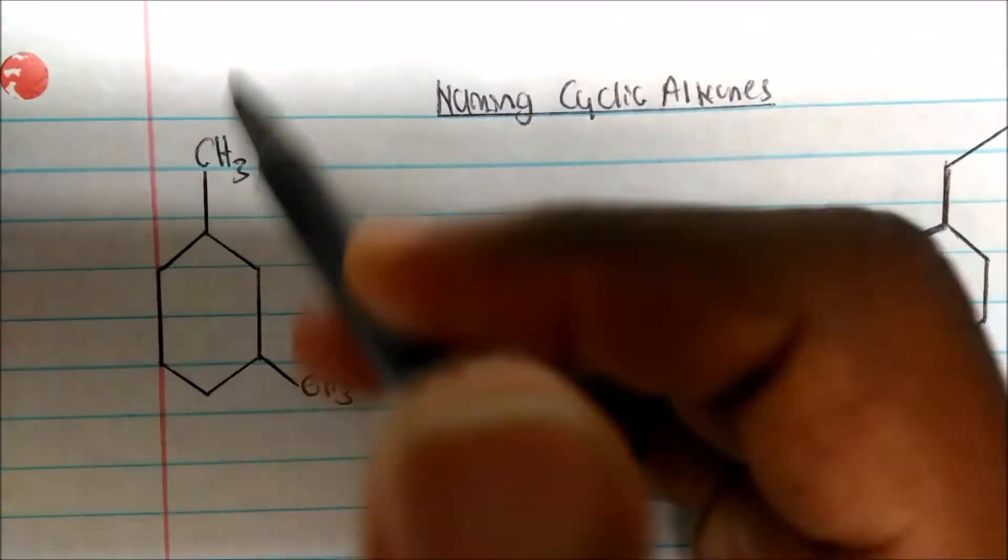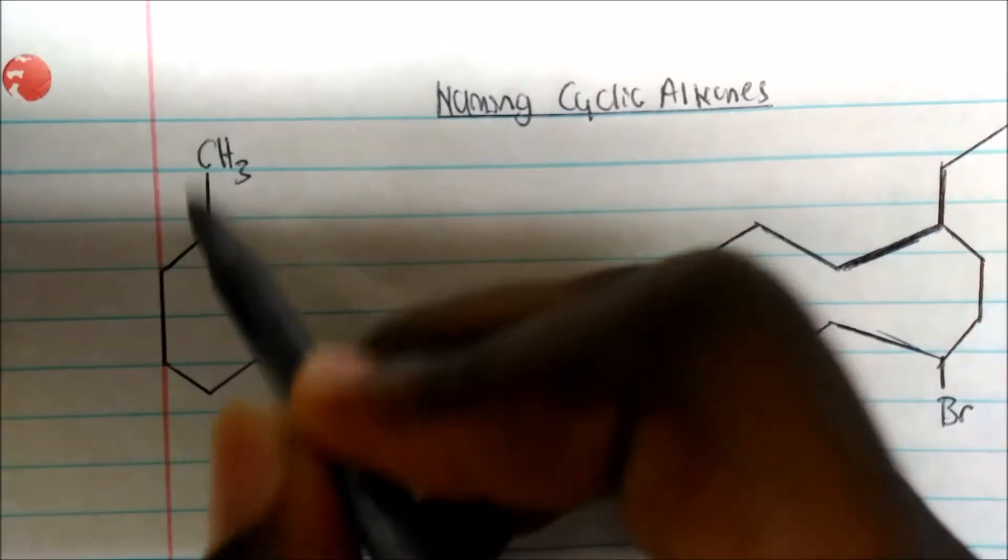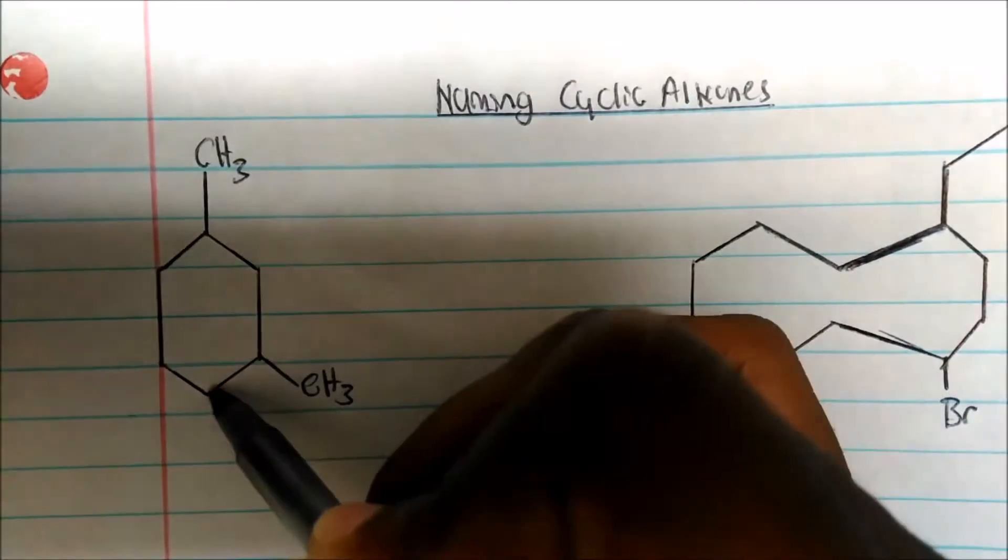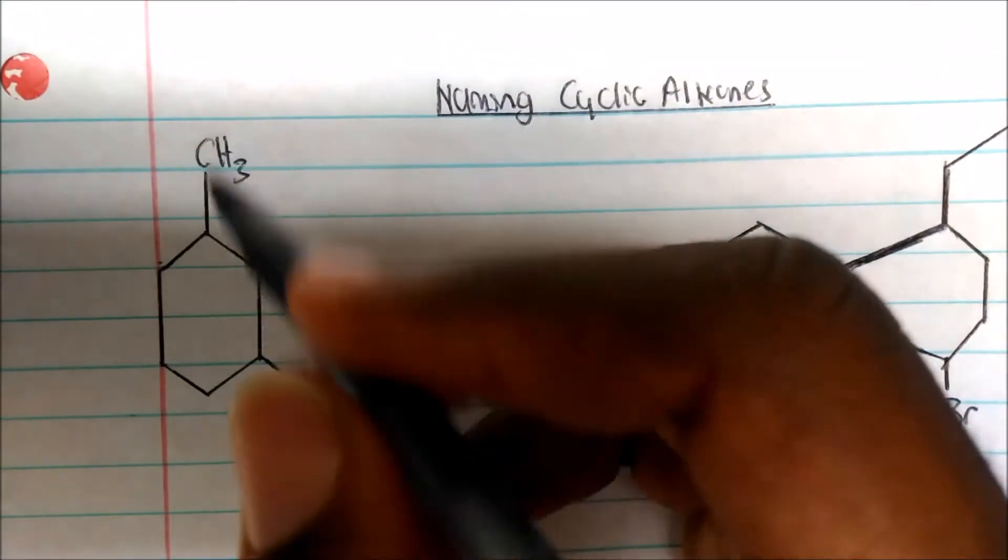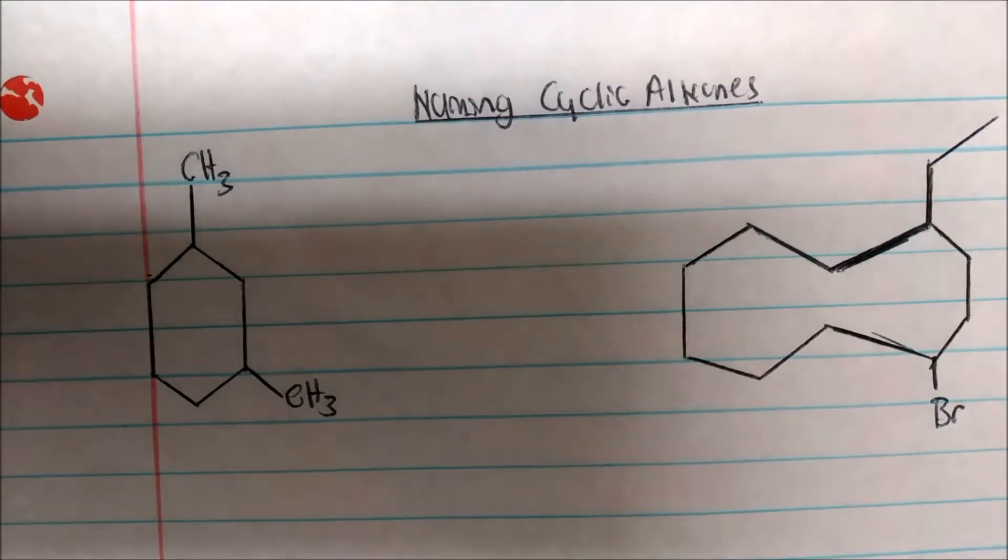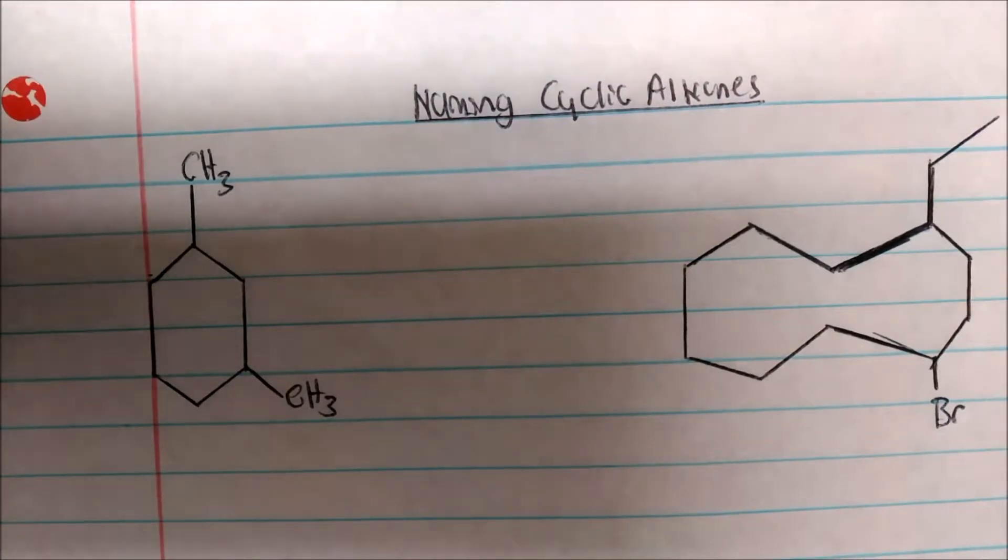So on this, we see a cyclic molecule here. So I'm going to call my carbon chain. So one, two, three, four, five, six. So the parent will be cyclohexane. It'll be cyclohexane.